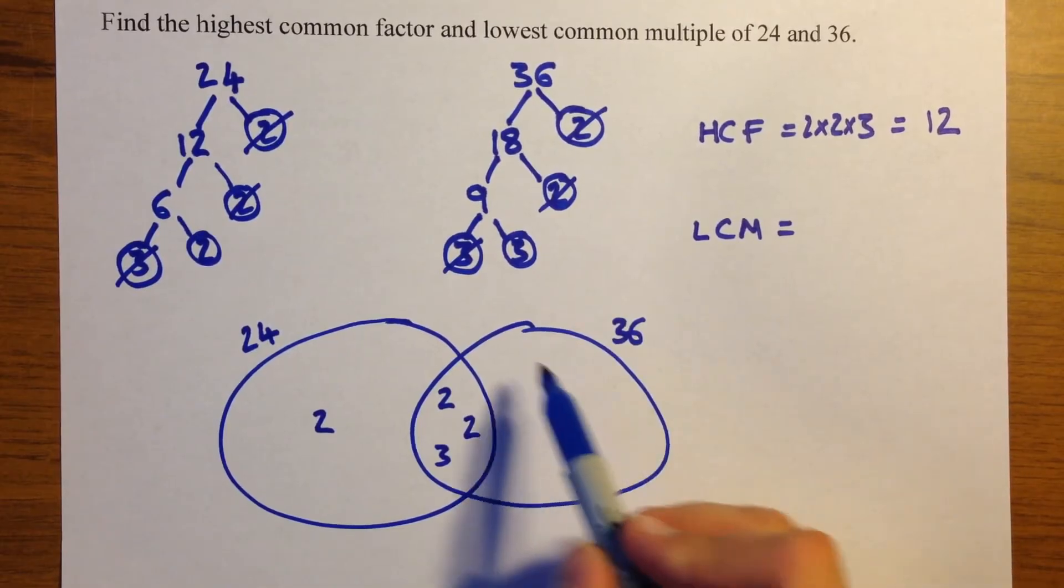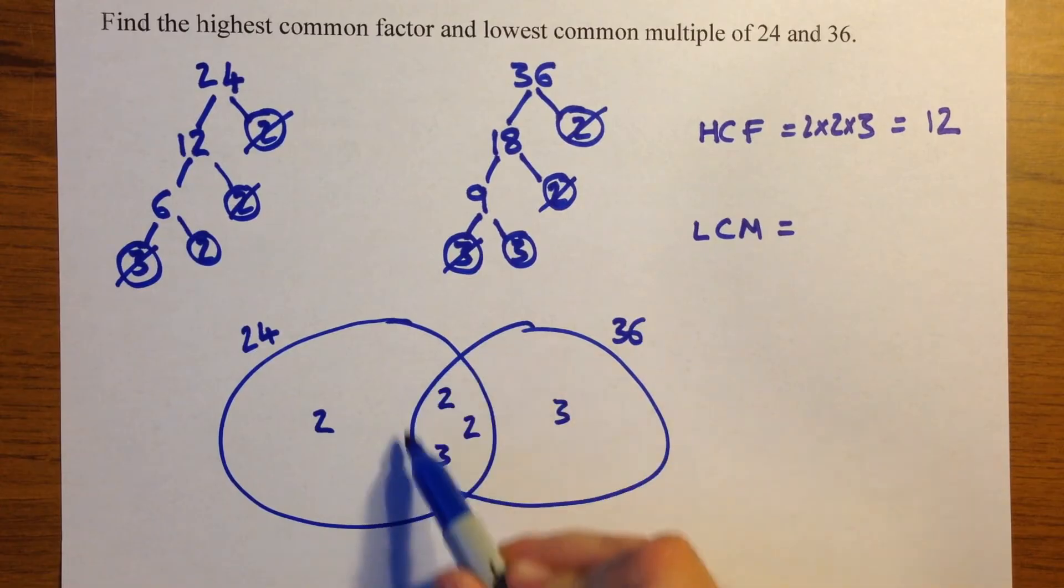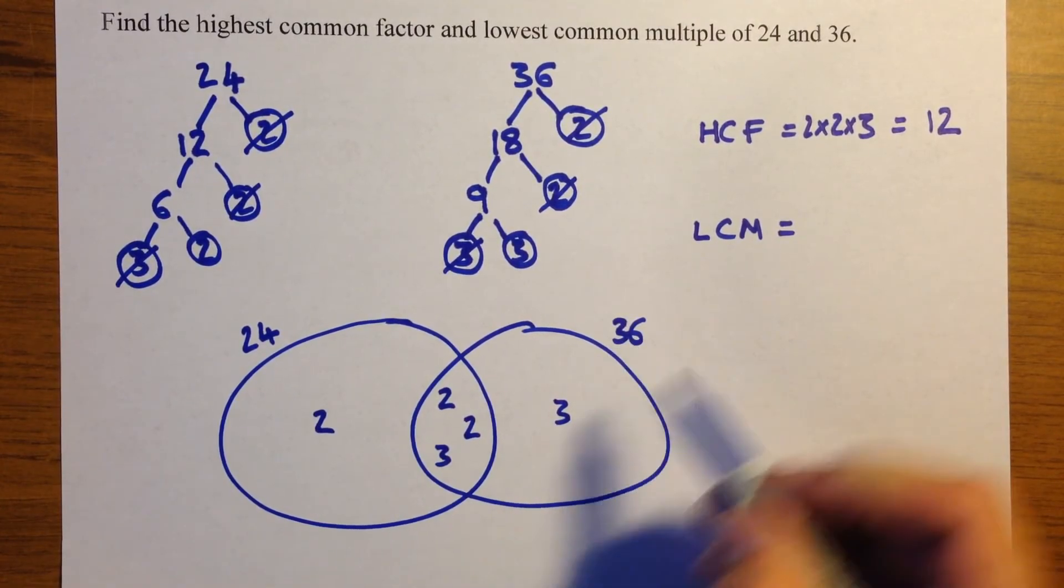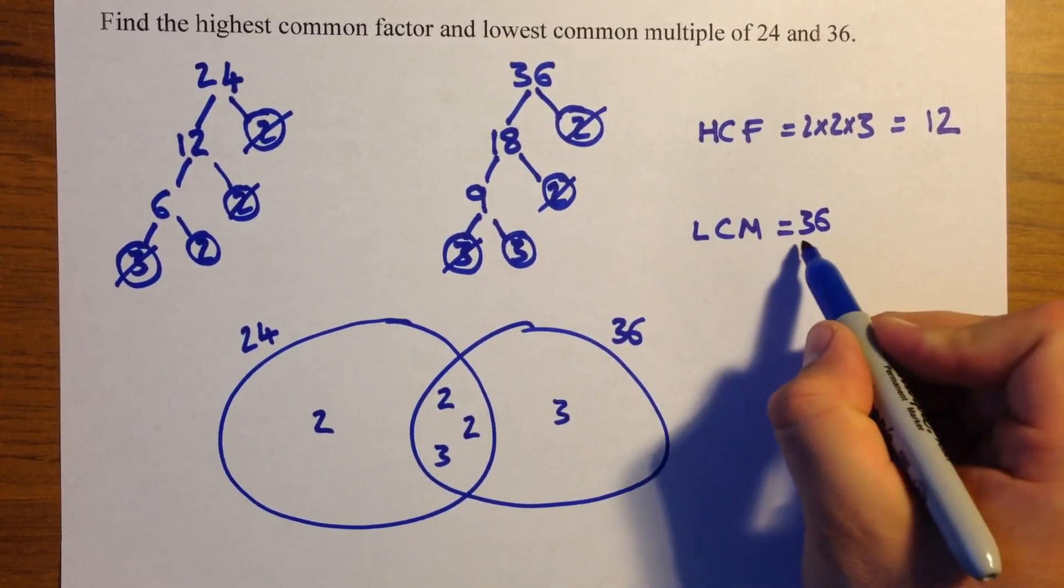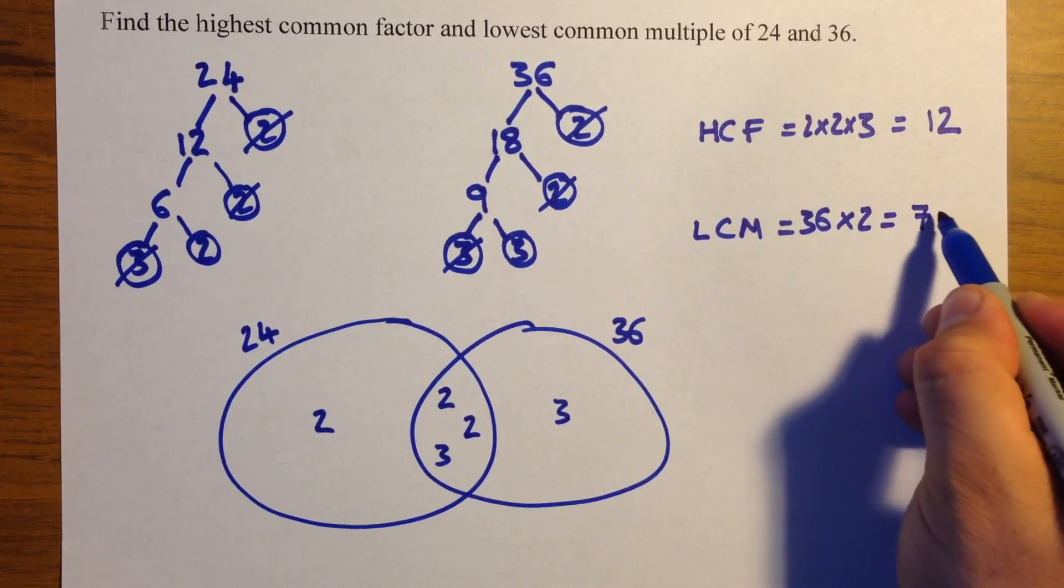And our lowest common multiple is all the numbers multiplied together. Now the numbers in this circle I know already multiply to 36. So all we need to do now for the lowest common multiple is 36 multiplied by 2 which gives us the answer 72.